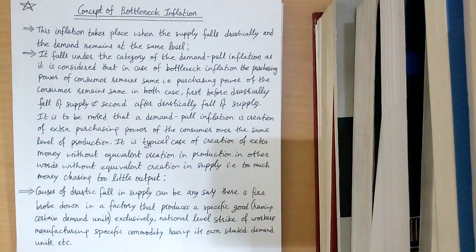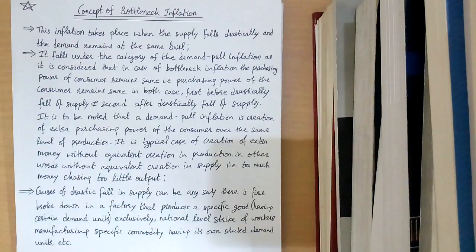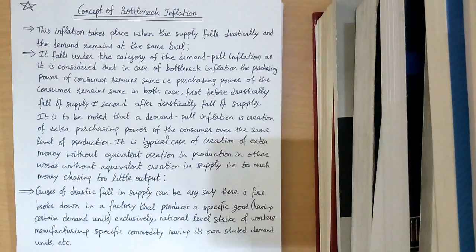The causes of a drastic fall in supply can be any. For example, a fire breaking out in a factory that exclusively produces a specific good with certain demand units, or a national-level strike of workers manufacturing a specific commodity that has its own stated demand units.